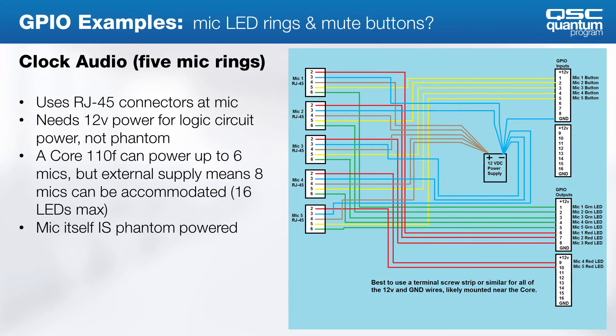By contrast, here is a microphone example by Clock Audio. Unlike the Shure MX396, this microphone does not use phantom power for the LEDs, so you need to provide a 12-volt power supply, which increases the complication of the wiring. These microphones have RJ45 connectors on Cat5 for the microphones themselves. In this system, we'll need to consolidate all of the 12-volt power and ground connections back to the core, which can power six of these microphones, and then distribute the green and red LED logic and the individual button wiring to the GPIO connections.